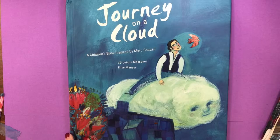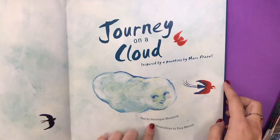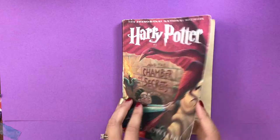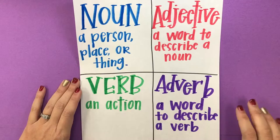Journey on a Cloud, a book about the artist Mark Chagall, was written by an artist named Veronica Massinot and illustrated by Elise Massinot — two sisters. Another book you might recognize, Harry Potter, was written by the famous J.K. Rowling, but was illustrated by someone named Mary Grand Prix.